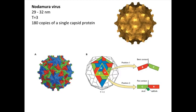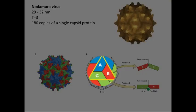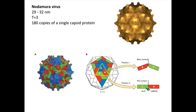Here's an example of a T equals three virus. It's an insect virus. It has 180 copies of a single capsid protein. Here it is in the triangular face here. And this is slightly bigger than the adeno-associated virus, because we've gone from 60 to 180 subunits. But the same principles apply. These are arranged with icosahedral symmetry. And all the interactions are similar, but they're not identical.